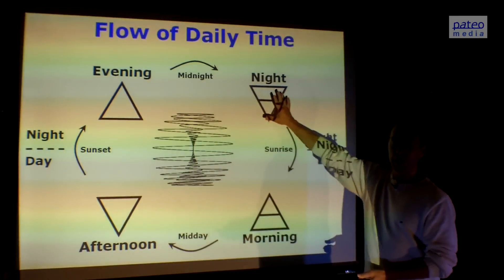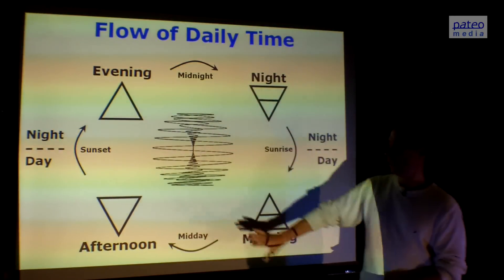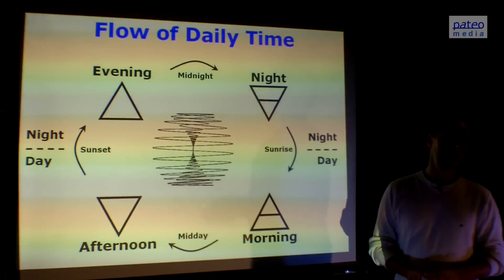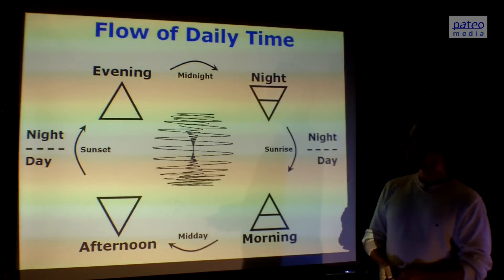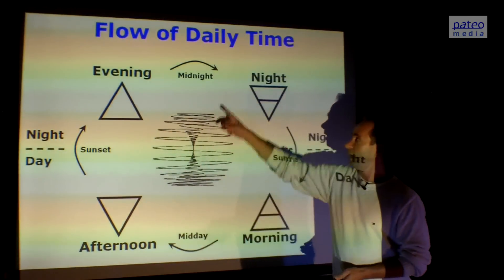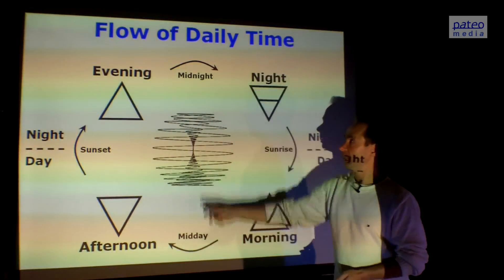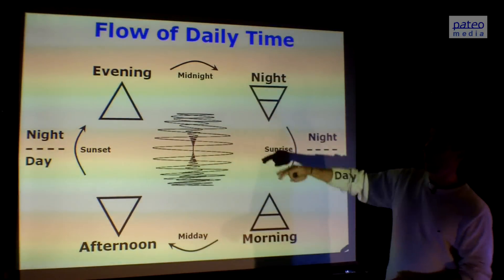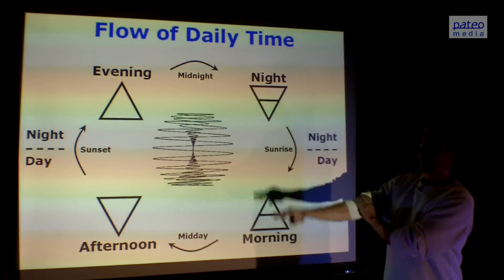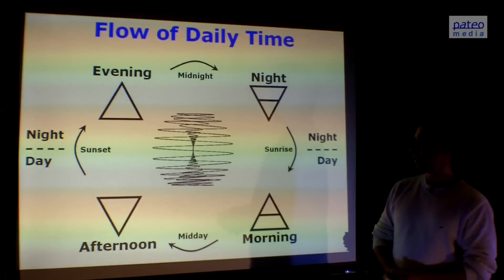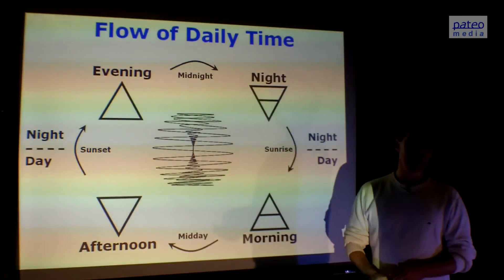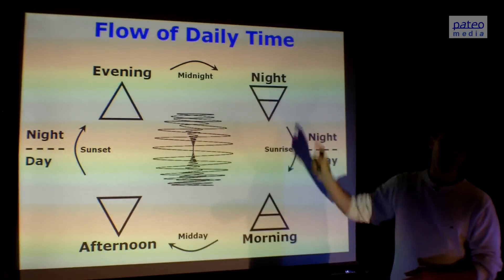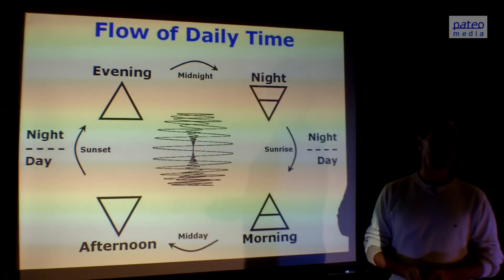Night is the earth energy, morning is the air energy, afternoon is the water energy, and evening is the fire energy. Here we find midday and midnight — exactly half the day period and half the night period, because the upper half is night and the lower half is the day period. The day period starts at sunrise and ends at sunset, and the other side is of course the night side.